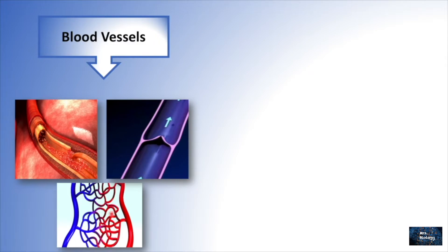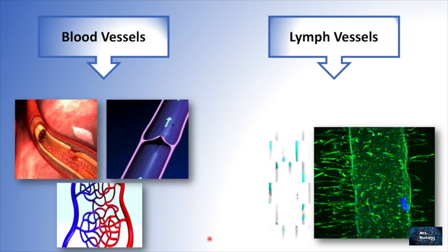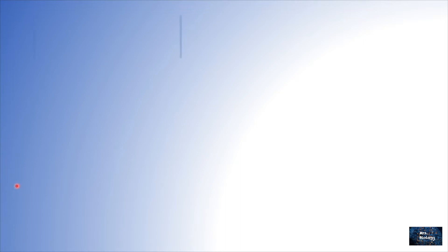In the lymphatic system, we don't have different types of lymph vessels. Lymph vessels are thin-walled vessels structured like blood vessels, but they are carrying lymph instead of blood.